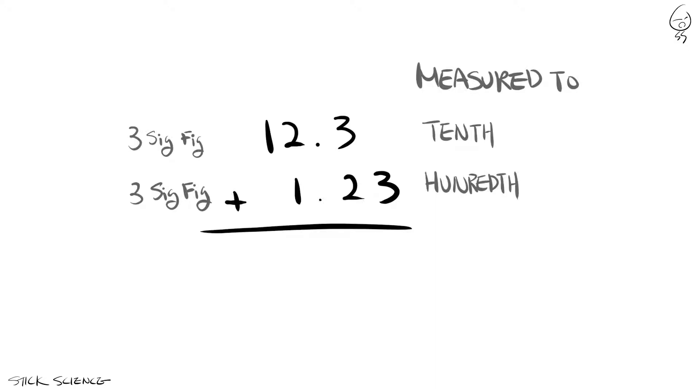Let's add them using the rules for addition and subtraction with significant figures. First, you identify the least precise measurement of the two and its place of uncertainty. That'll be 3 in 12.3 since 12.3 has its uncertain digit 3 in the 10th place, while 1.23 has its uncertain digit in the 100th place.